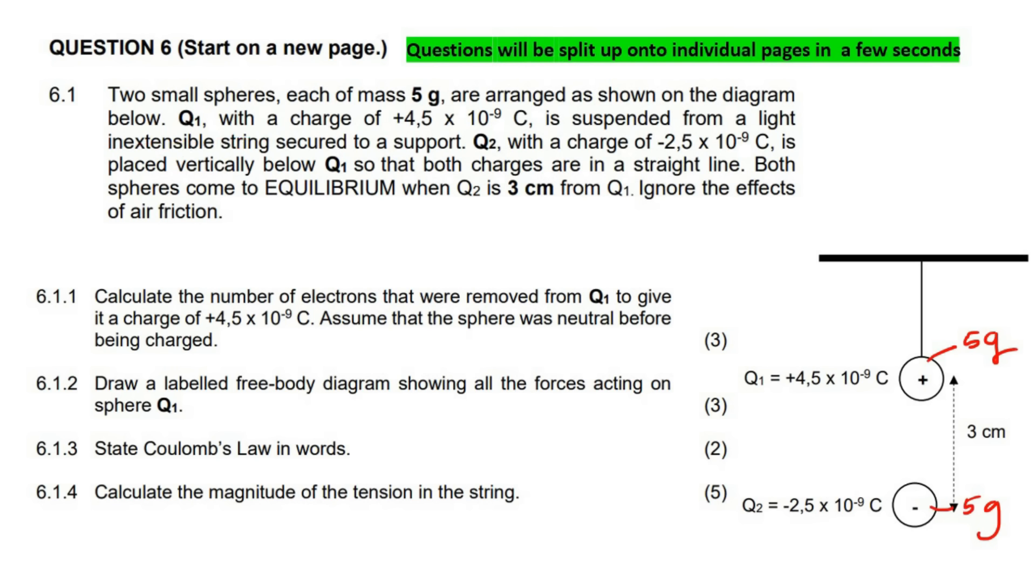It's always an inextensible string, blah blah, ignore friction. So Q2 with a charge of minus 2.5 is placed vertically below so that both charges are in a straight line. Both spheres come to equilibrium, meaning the system is stationary when Q2 is three centimeters. Ignore the effect of air friction. So first question: